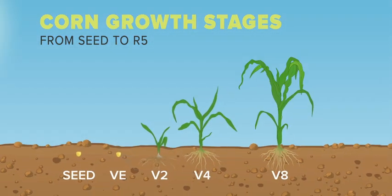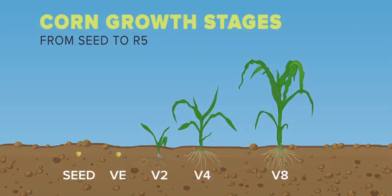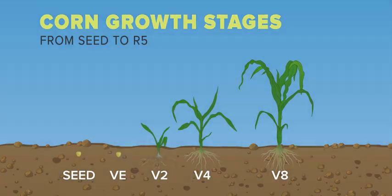The V7 to V9 stages begin the rapid growth phase. If the corn plant is stressed, lower leaves may die. At approximately 610 GDUs, eight leaves will have formed.